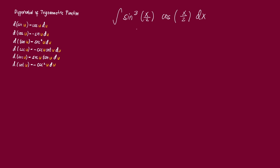Notice on this function there are two factors: we have sine cube of x/2 and we have cosine of x/2. Now out of these two factors, the sine x cubed is the one with n. So our n is equal to 3. Take note, the exponent 3 is the exponent of the whole trigonometric function sine. So n = 3 and our u is equal to sine of x/2.